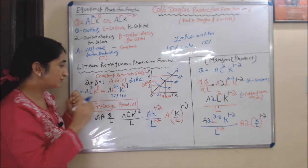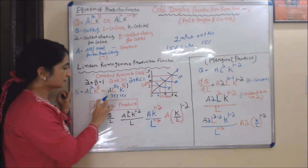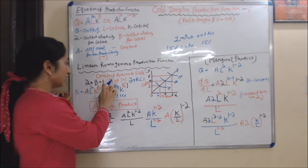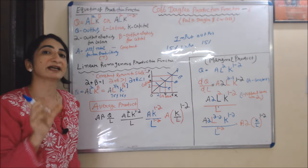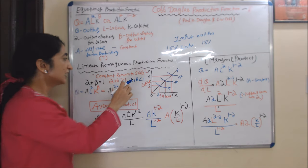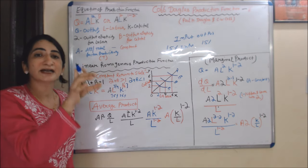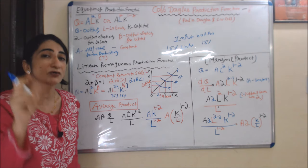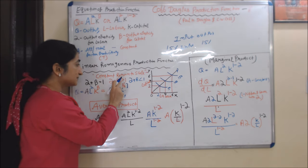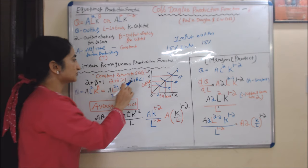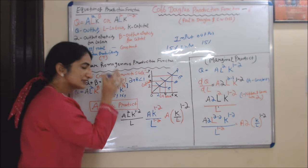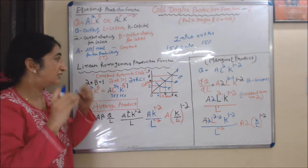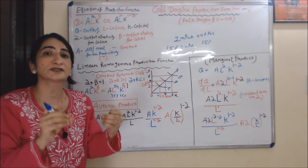From this example, we can also see that labor's contribution to production is 75% and capital's contribution is 25%. If alpha plus beta is greater than 1, we get increasing return to scale. If alpha plus beta is less than 1, we get decreasing return to scale. Cobb-Douglas production function is based on linear homogeneous production function, meaning constant return to scale, where alpha plus beta equals 1.